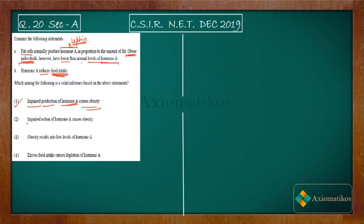The second option says: impaired action of hormone A causes obesity. Although it can happen that hormone A is not doing its job properly and that is why people are getting obesity problems, this is not correct because it cannot be concluded from the given statements. The question is not talking about the action of the hormone, so we cannot mark this as correct. We need a valid inference based on the above statements, so B is incorrect.